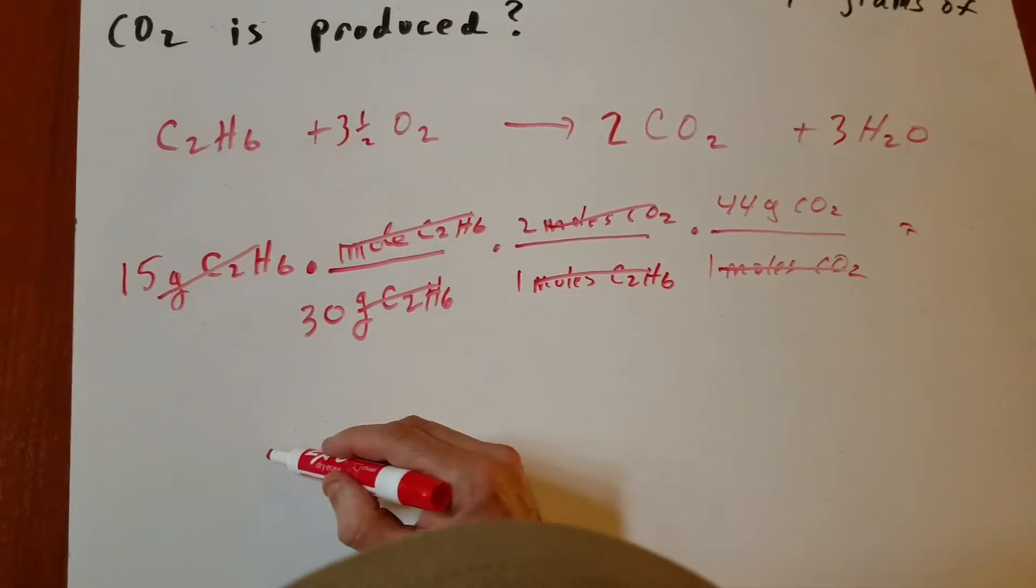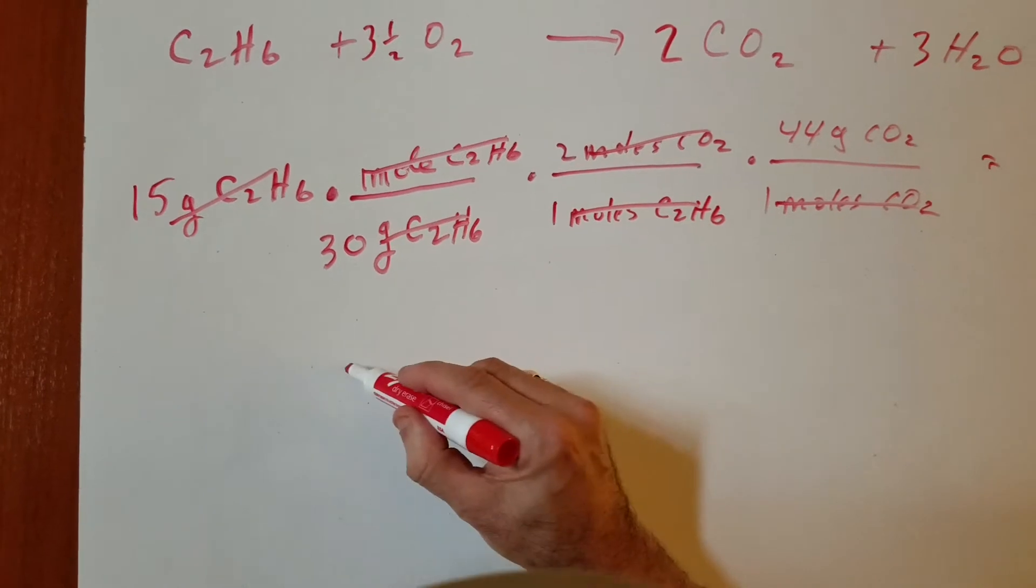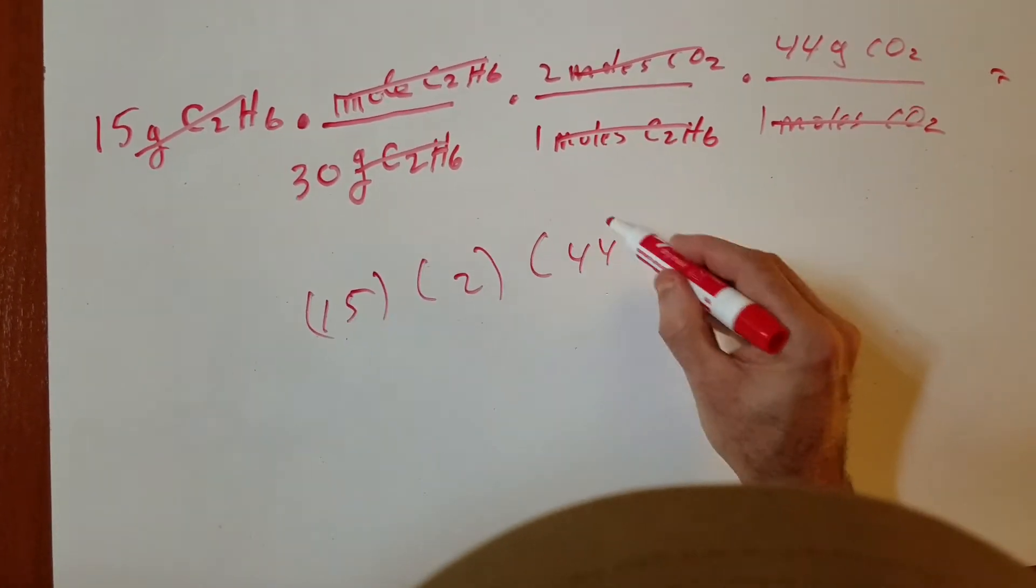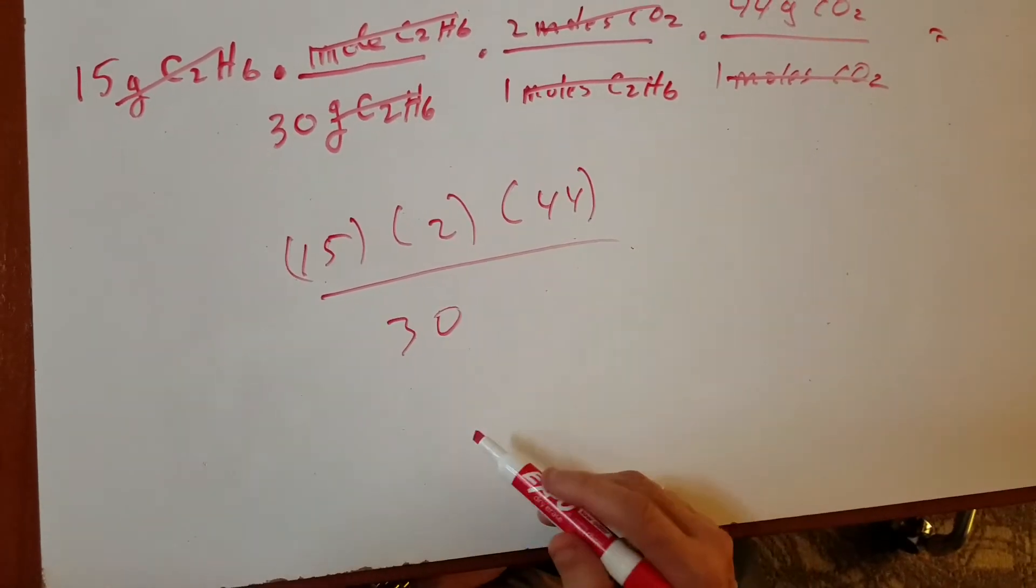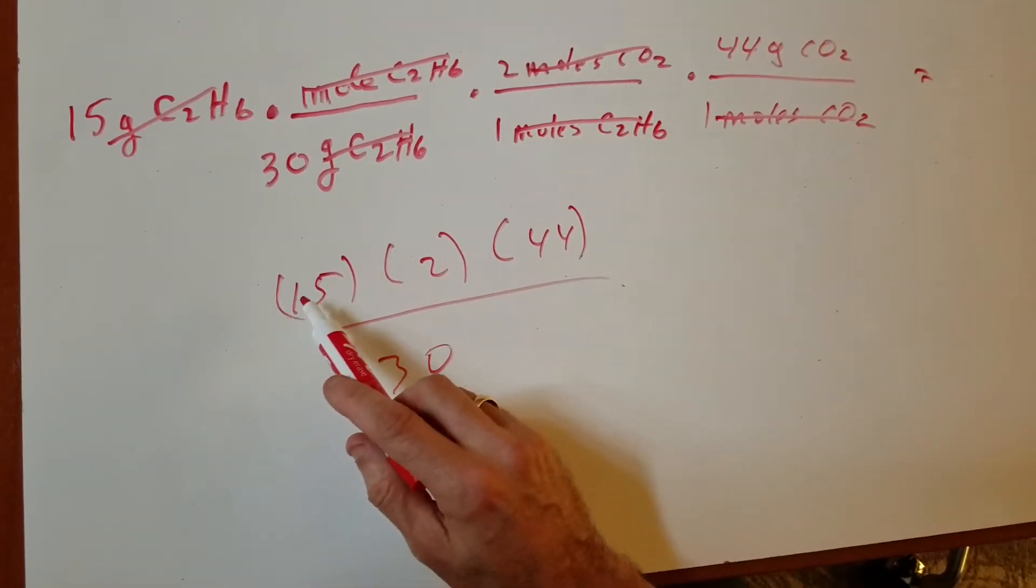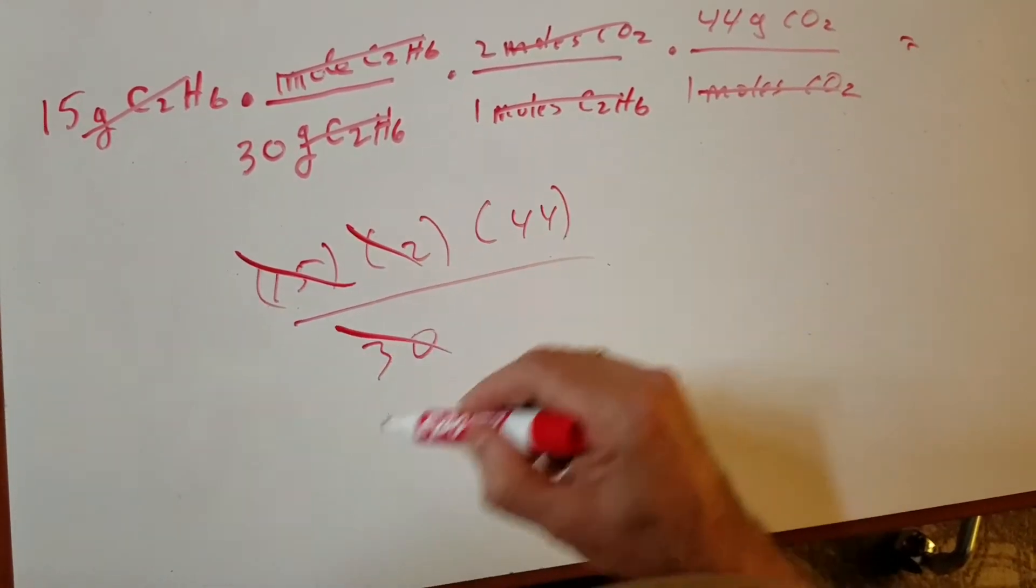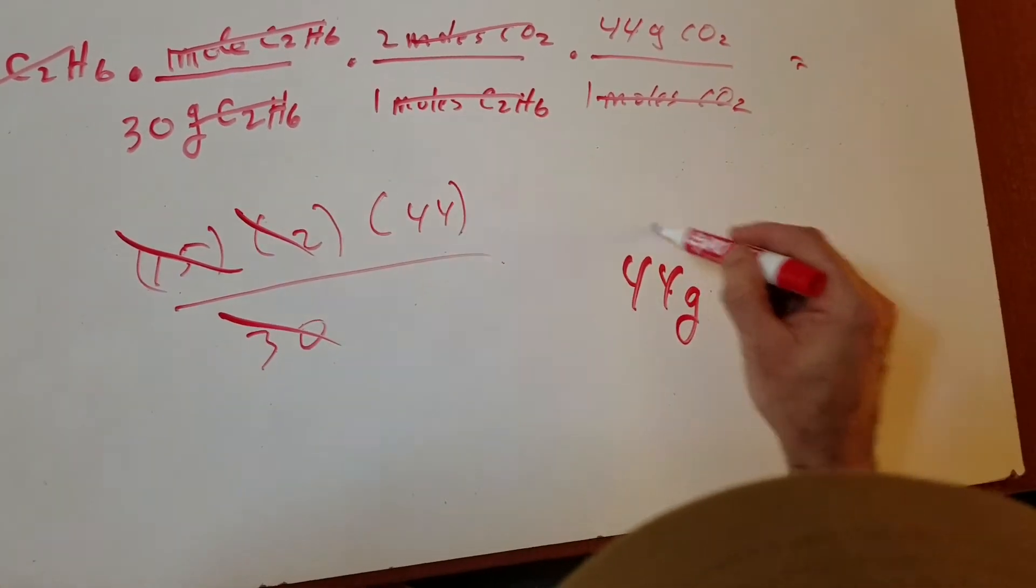So what we're left with is we're left with 15 over 30. We have a 15, we have a 2, we have a 44, and we have a 30. Hopefully you can see how these numbers are going to drop out absolutely wonderful. 15 times 2 is 30, so you have 30 on the top, 30 on the bottom, and you're left with the final answer of 44 grams.